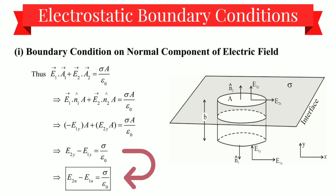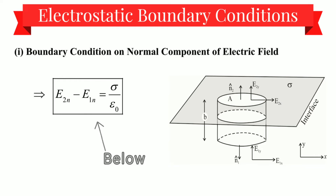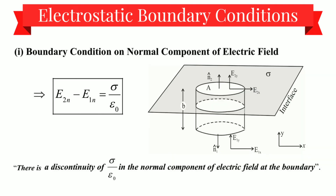Changing the y-component into the normal component, we can finally write: E₂n minus E₁n equals σ upon ε₀. Here E₂n is the component of electric field which is normal to the surface and just above it, and E₁n is the component normal to the surface and just below it. Thus there is a discontinuity of σ upon ε₀ in the normal component of electric field at the boundary.